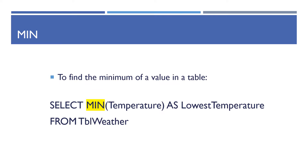MIN — if you want to find the smallest temperature in a table of weather conditions, you use: SELECT MIN(temperature) AS lowest_temperature FROM weather. When you use an aggregate function it's a good idea to use AS followed by a name so that you get a nice column heading.